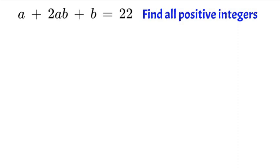Welcome to another Olympiad math video. In this video we're going to find the positive integers for a and b in this equation. So we have a plus 2ab plus b equals 22.